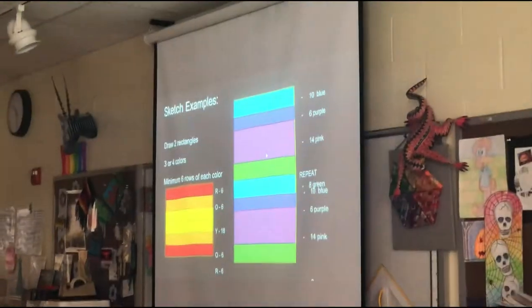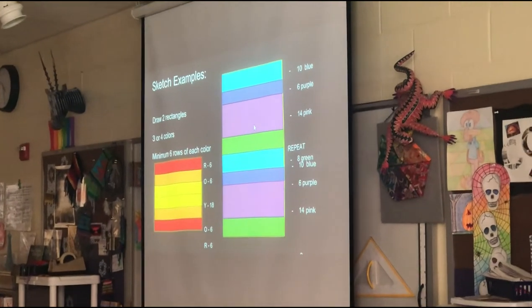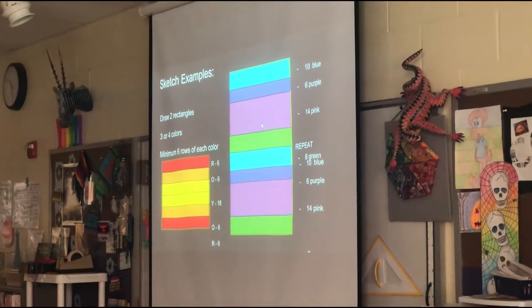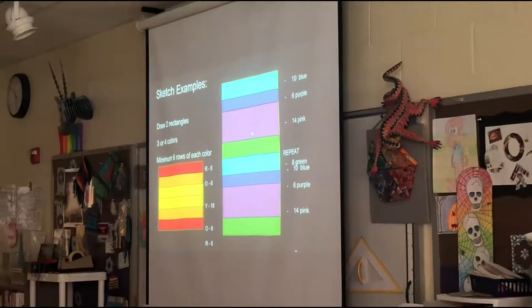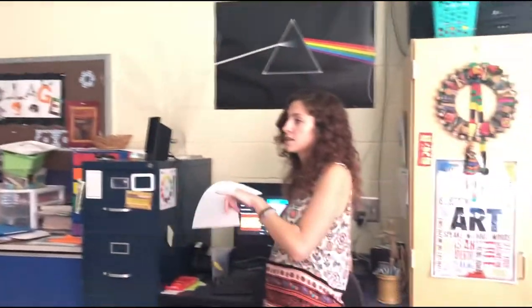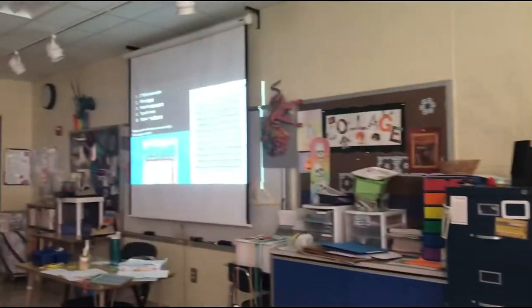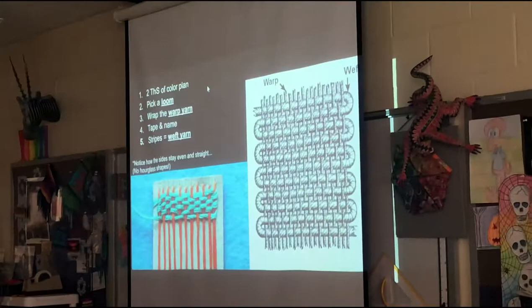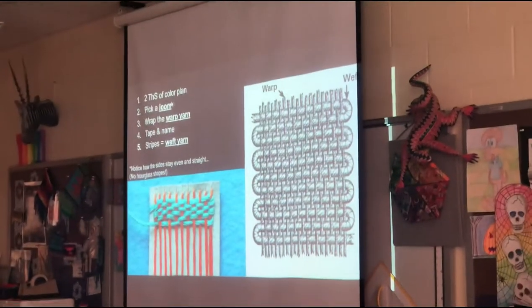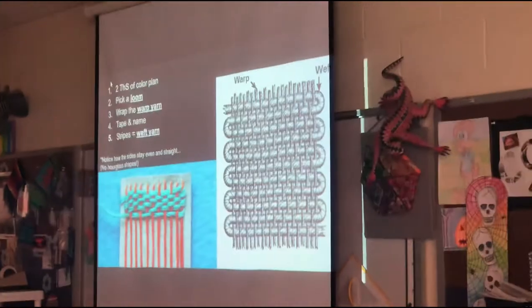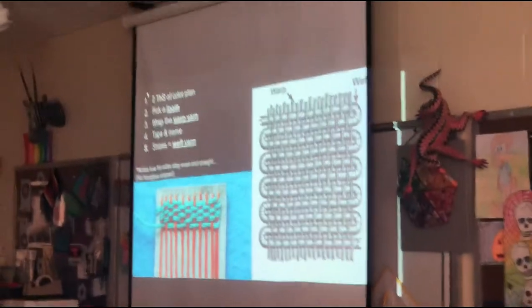At the bottom of your paper, I'm going to have you sketch two rectangles. I know there's a typo on there — it says draw a square, so cross out square and write rectangle. It's going to be a tall rectangle, and we'll do this in a minute. Here's basically what you're going to do today: two thumbnail sketches of a color plan.